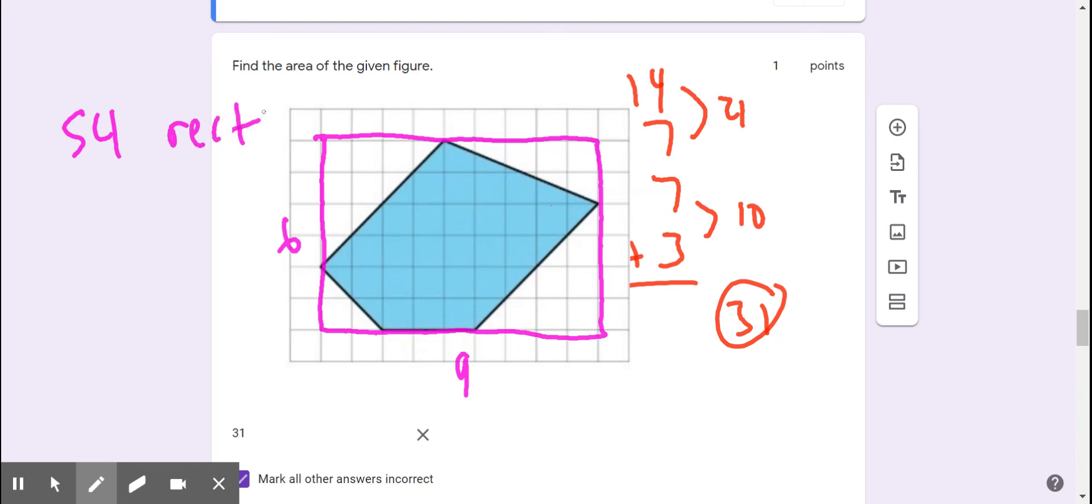And now we need to find the area of these white triangles that I created and then subtract out the white triangles. And what's going to be left is the area of the shaded space.